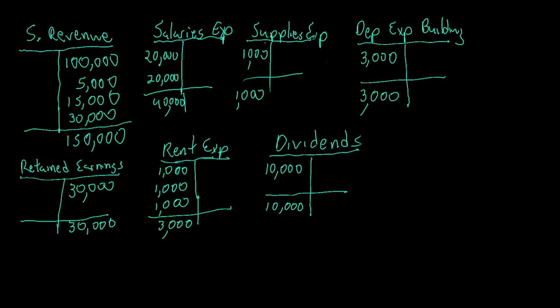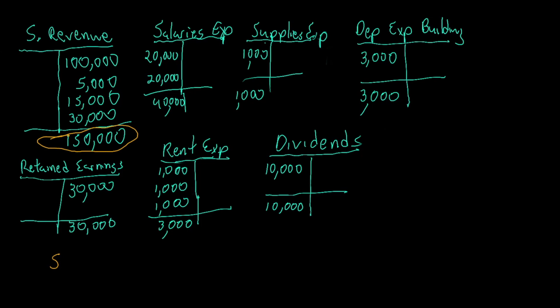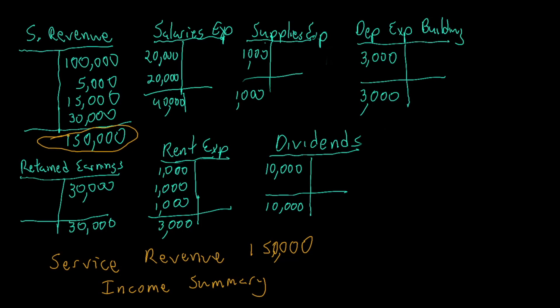Let's get through these steps. What we have here is an example of a partial ledger, which consists of only the accounts needed to make the proper closing entries. Our very first step is to close out service revenue to income summary. We can see on the ledger that we have an ending balance in our service revenue account of $150,000 on the credit side. To make that first entry, we're going to close this out so the balance becomes zero — resetting the service revenue account for the next period. We're going to debit service revenue for $150,000 and credit income summary for the same amount.